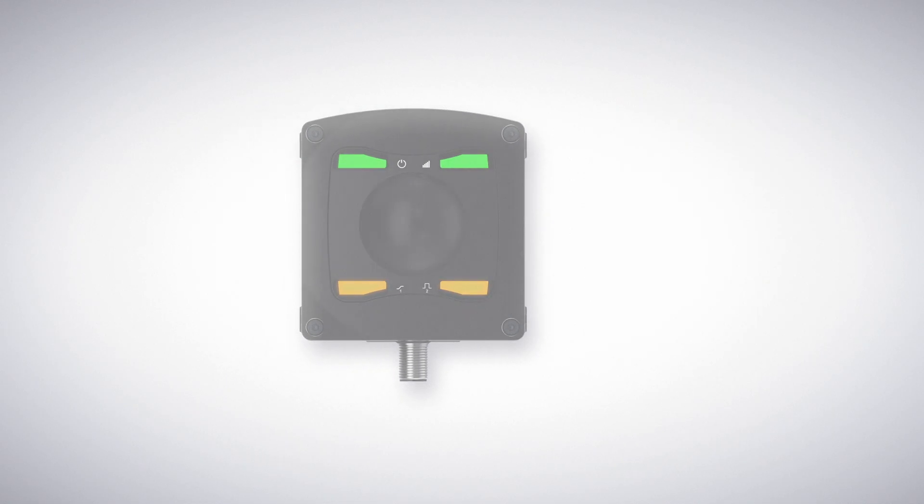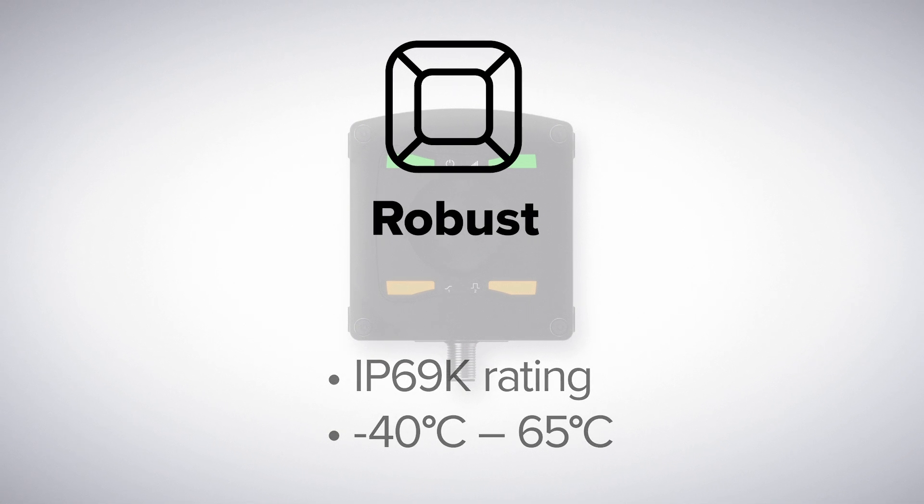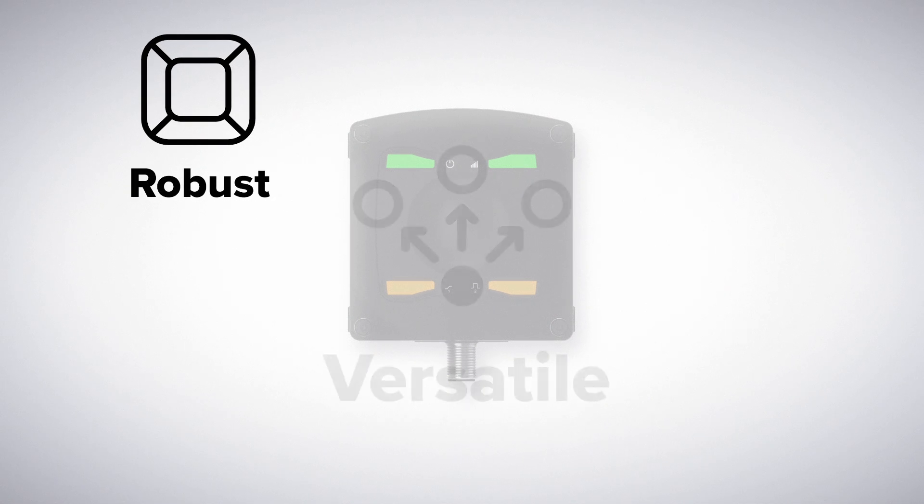The Q90R family is robust. It has an IP69K rating, operates from negative 40 to 65 degrees Celsius, and has a durable powder-coated aluminum housing. It's versatile.